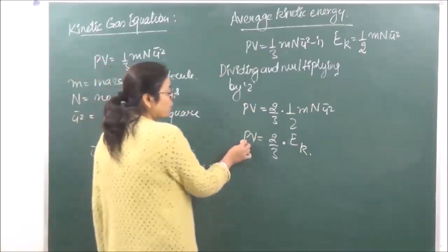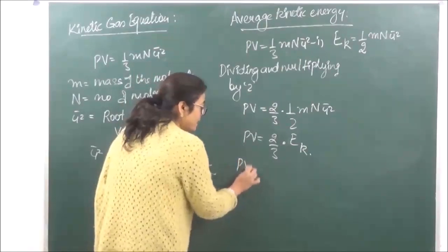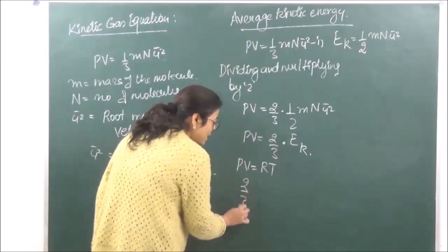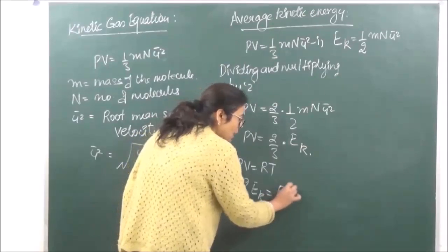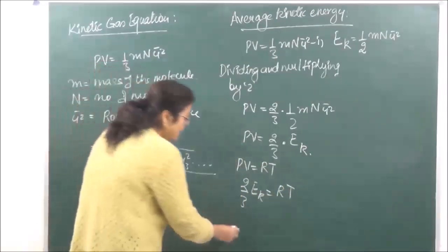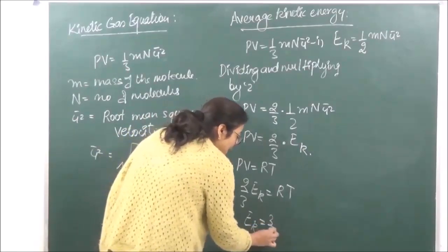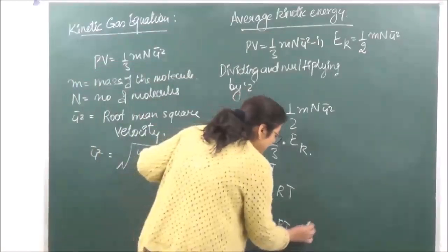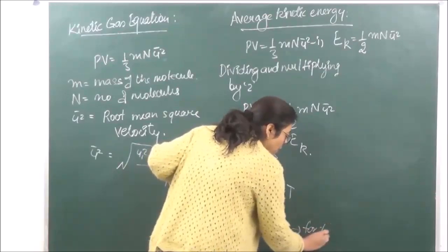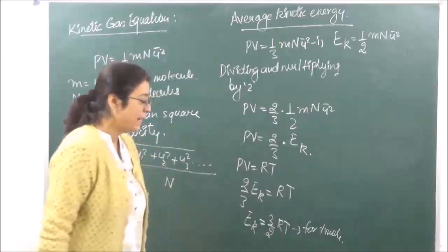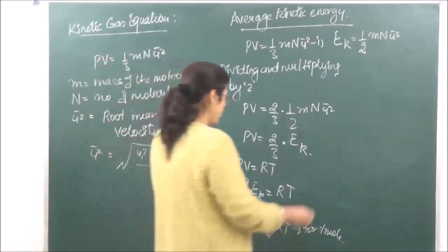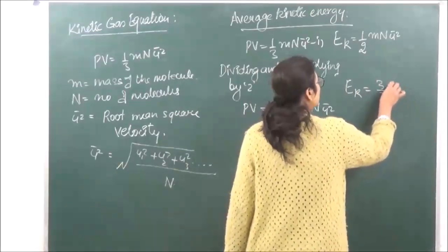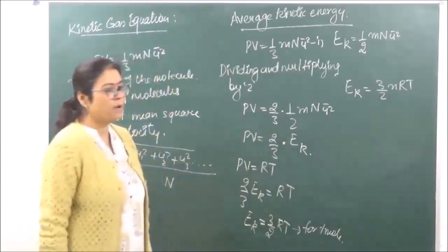Now we know that according to the gas equation, PV = RT. So the above equation can be written as 2/3 × EK = RT, which gives EK = 3/2 RT. This equation is for 1 mol. If we calculate for N number of moles, we will get EK = 3/2 NRT.